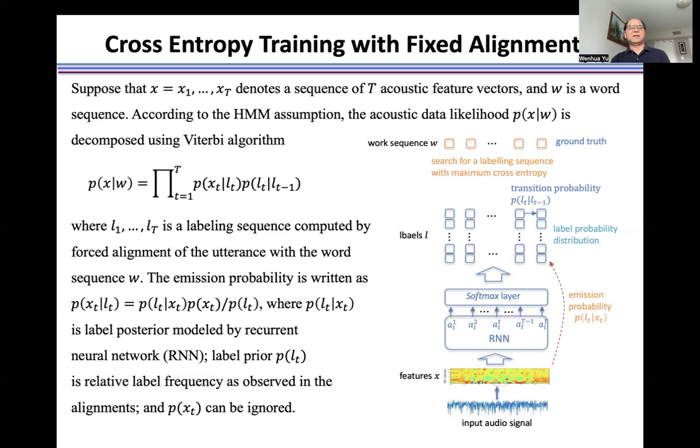The emission probability is written as p(x_t|l_t) = p(l_t|x_t)p(x_t)/p(l_t) through Bayes' rule, where p(l_t|x_t) is the label posterior modeled by recurrent neural network. The prior p(l_t) is the relative label frequency as observed in the alignment, and p(x_t) can be ignored.